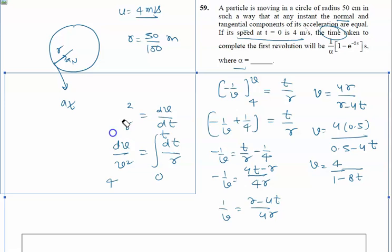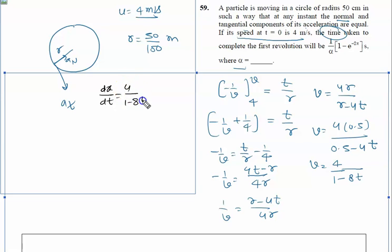So dx by dt equals 4 divided by 1 minus 8t. Now again we will integrate like this.